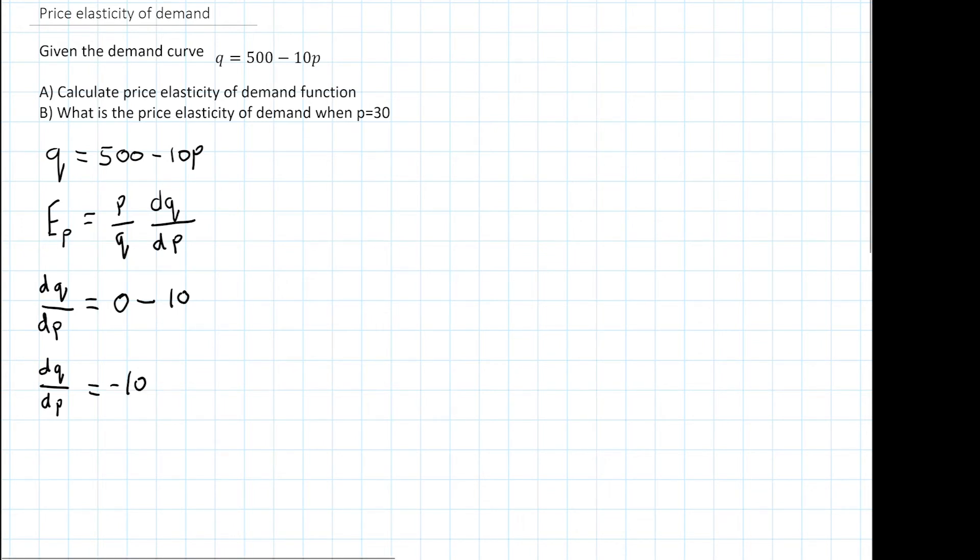So let's go back to our original formula and we're just going to substitute with what we've been given. Ep equals p over q, which of course is given by the demand curve as 500 minus 10p.